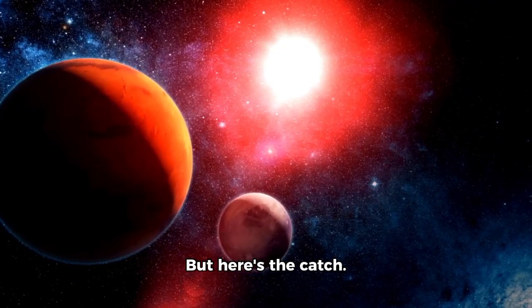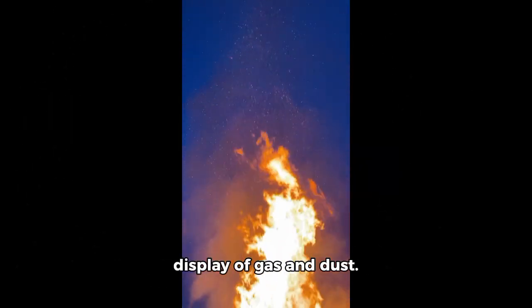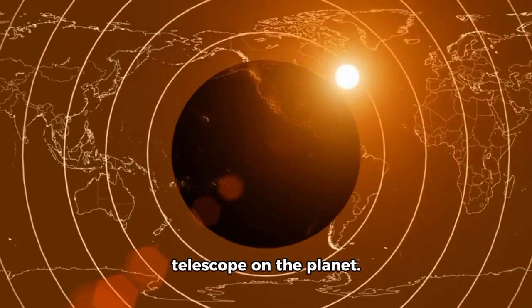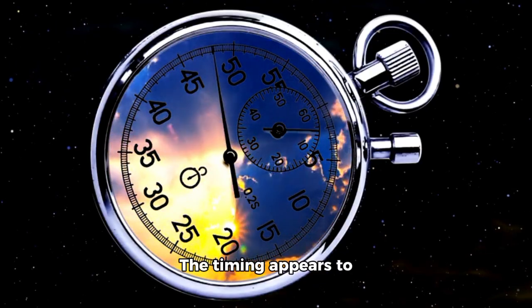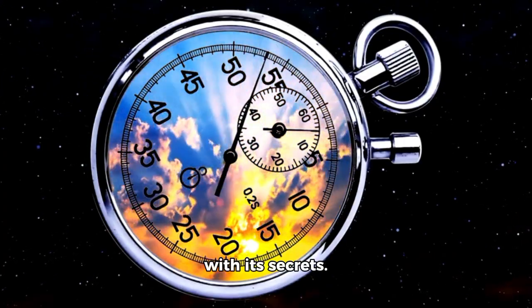But here's the catch. We almost won't get to see it at all. On the 30th of October 2025 is when 3i Atlas reaches perihelion, its closest approach to the sun. This is, for most comets, the moment of truth when they flare up in a dazzling display of gas and dust. But for us, it'll be a cosmic blackout. 3i Atlas will be hidden behind the sun's glare, invisible to every telescope on the planet. The timing appears almost poetic, as if the universe is playing hide-and-seek with its secrets.